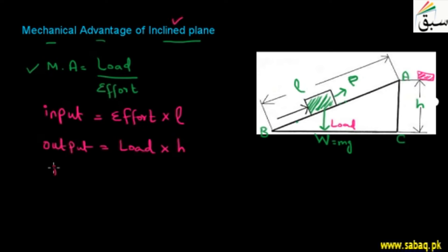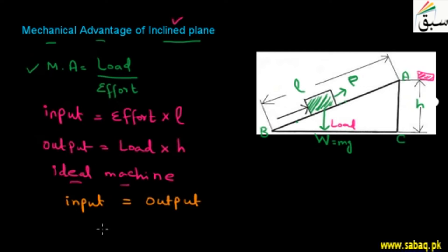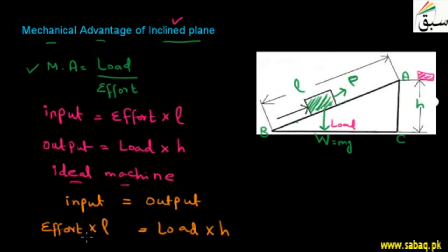Now, in the ideal machine case — which we have studied — the efficiency is 100%, meaning that input work is equal to output work. So if I put the values in, I can write: effort × L = load × H. This is just work equals force times distance, and in the ideal case the input work equals the output work.